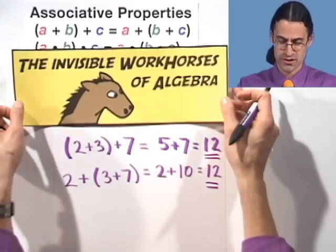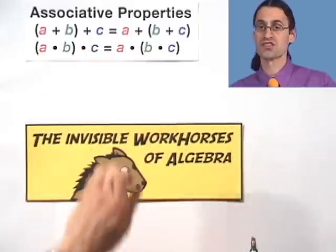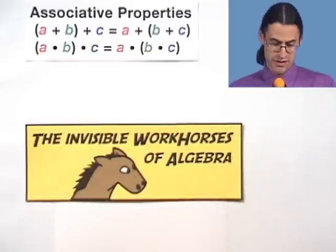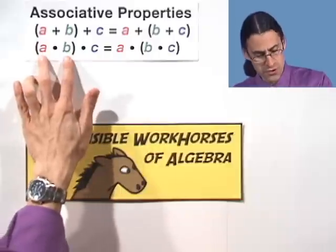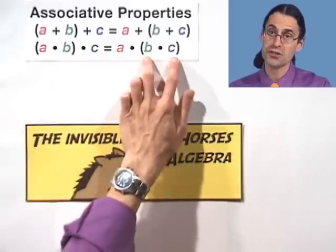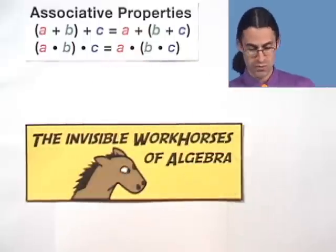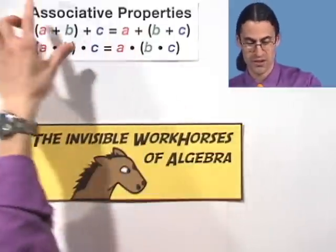And similarly with multiplication. If you have three numbers that you're multiplying together, you can either multiply the first two and then take that product and multiply by the last, or you can take the last two, take their product and multiply by the first. It doesn't make a difference what way you do it. And we call that property associative.